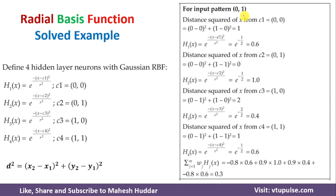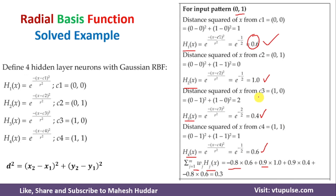For the second input pattern 01, we calculate the distance to each centroid as done in the previous step, then compute the output at each hidden layer neuron. The outputs are: h1(x) = 0.6, h2(x) = 1.0, h3(x) = 0.4, and h4(x) = 0.6. Using the same formula with weights minus 0.8, 0.9, minus 0.9, and minus 0.8, once you solve the equation you get 0.3 as the output for the second input pattern.